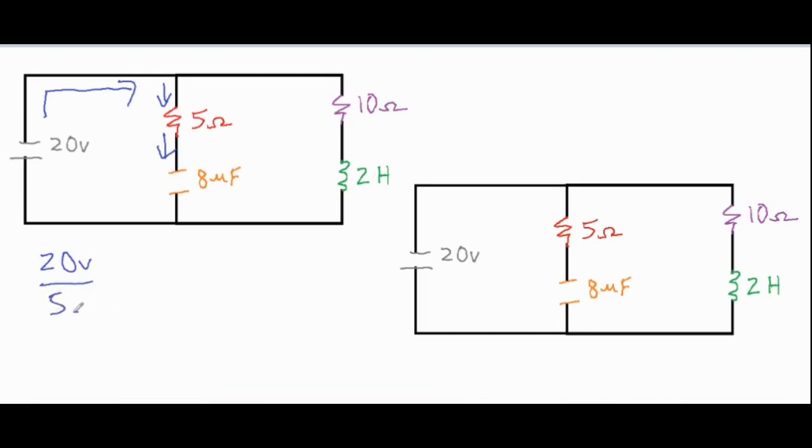by 5 ohms and then we'll have 4 amps of current running through this 5 ohm resistor. It's going to create a voltage drop of 20 volts as it passes through, and then from there that current is going to slowly decay down to zero. So those are our initial conditions for this branch over here.